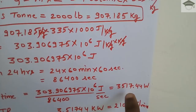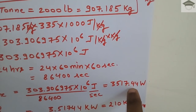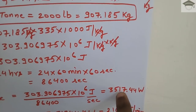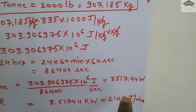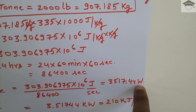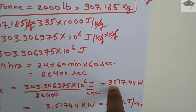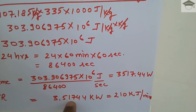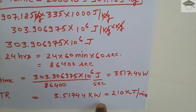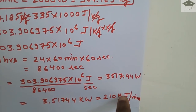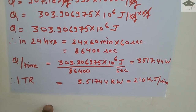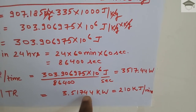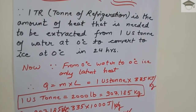This gives us 3517.44 watts — since joule per second equals watt. Converting to kilowatts, we place the decimal to get 3.51744 kilowatt, which is also equal to 210 kilojoule per minute. Hence we have proved that 1 TR = 3.51744 kilowatt.